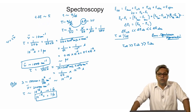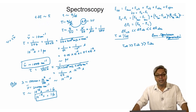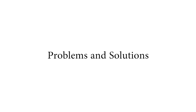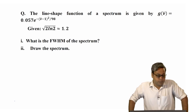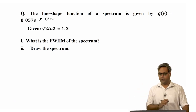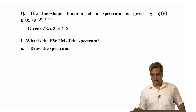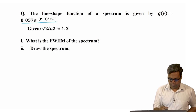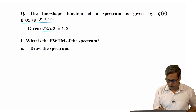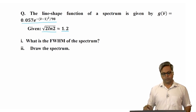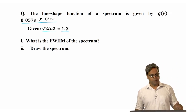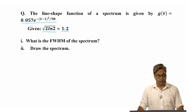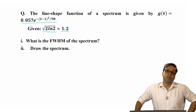In the next modules, you will study different forms of spectroscopy — like rotational spectroscopy, vibrational spectroscopy, etc. — in greater detail. You will see that the concepts covered in this first module will appear time and again in the later modules. We will end this lecture by solving a few more problems. Here is the first problem: the line shape function of a spectrum is given by this expression, and it is also given that the square root of 2 ln 2 is approximately equal to 1.2.